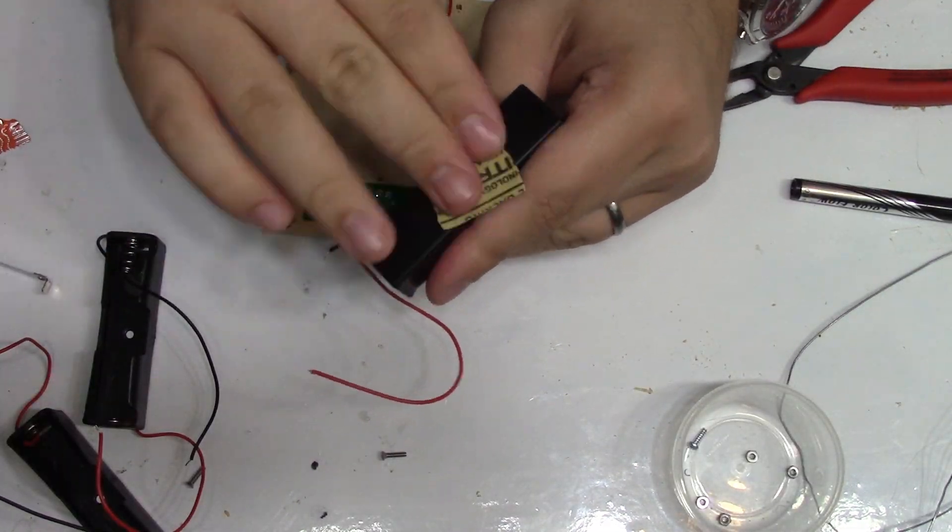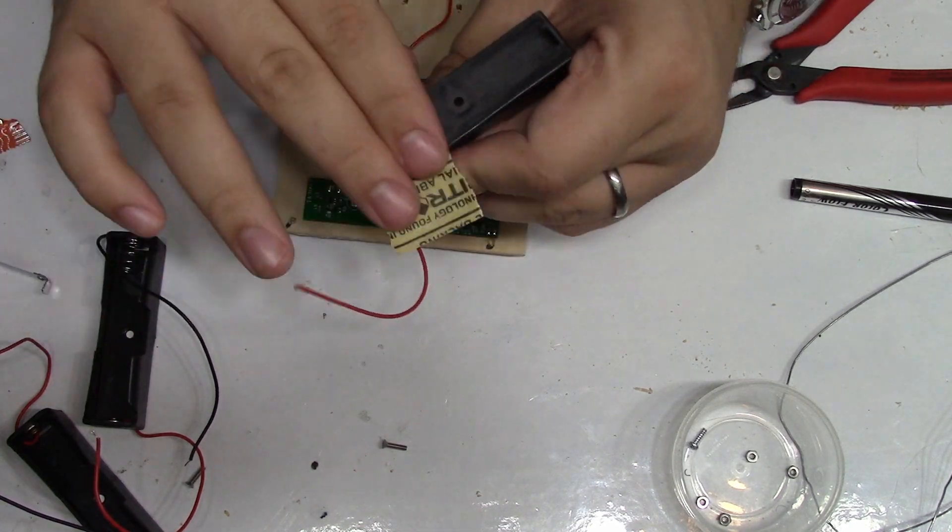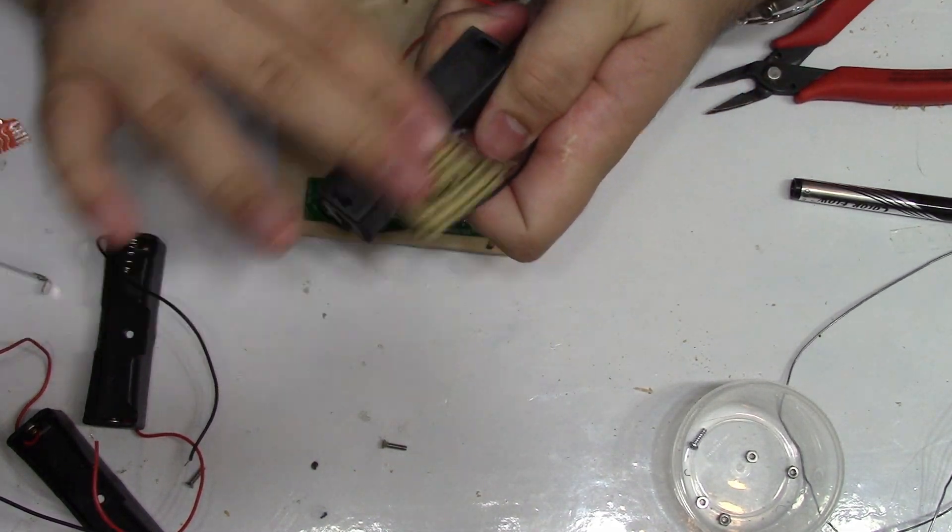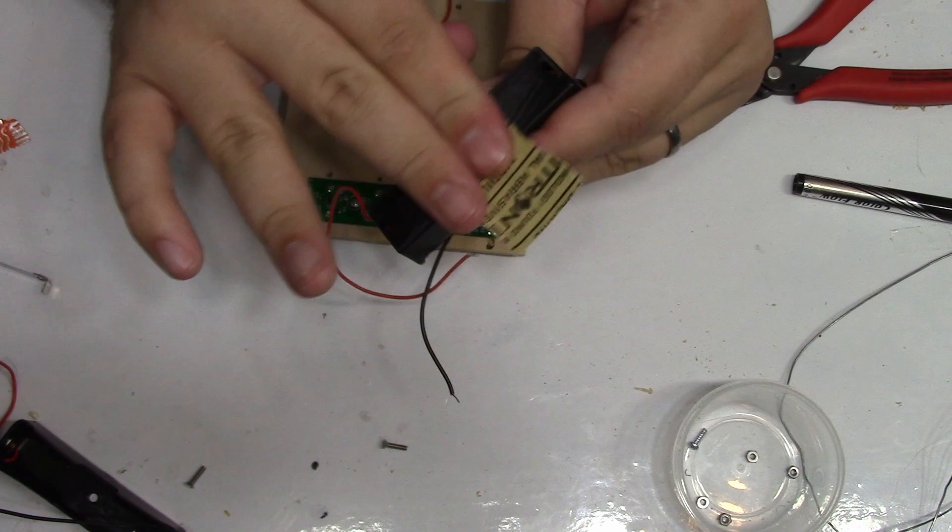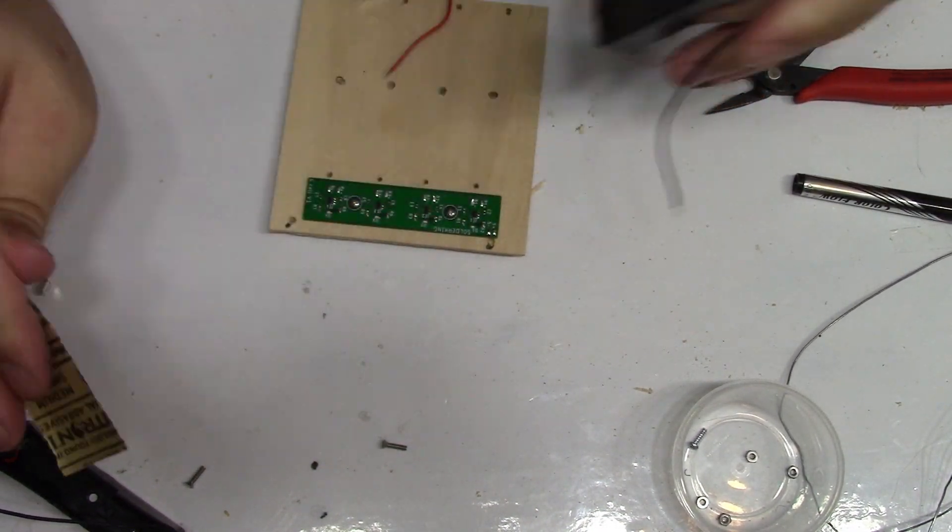Now that all the holes are drilled I can assemble everything. These cell holders aren't the greatest and the one mounting hole on them isn't enough to keep them from moving all over the place. So I sanded the bottom of the holders and used epoxy in combination with the screw to really hold them to the wood.